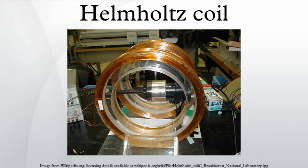This configuration leaves about 7% variation in field strength between the center and the planes of the coils. A slightly larger separation distance reduces the difference in field between the center and the planes of the coils, at the expense of worsening the field's uniformity in the region near the center. In some applications, a Helmholtz coil is used to cancel out the Earth's magnetic field, producing a region with a magnetic field intensity much closer to zero.